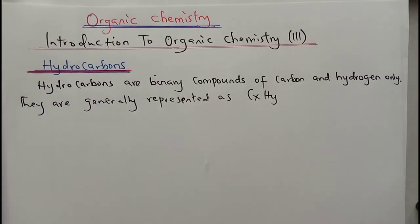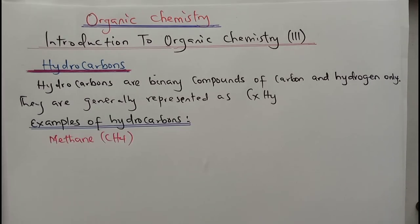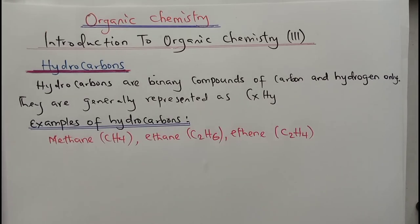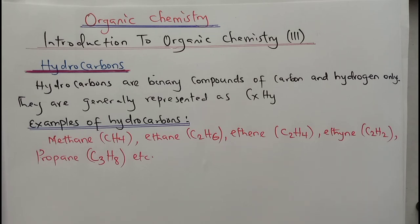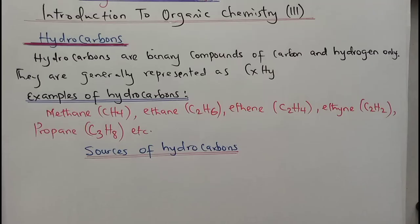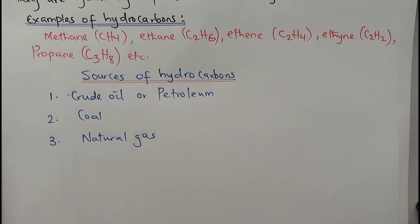Examples of these hydrocarbons include methane, ethane, and propane. We need to look into the sources of hydrocarbons — how we can get all these things. The sources of hydrocarbons include crude oil, also known as petroleum, coal, and natural gas.